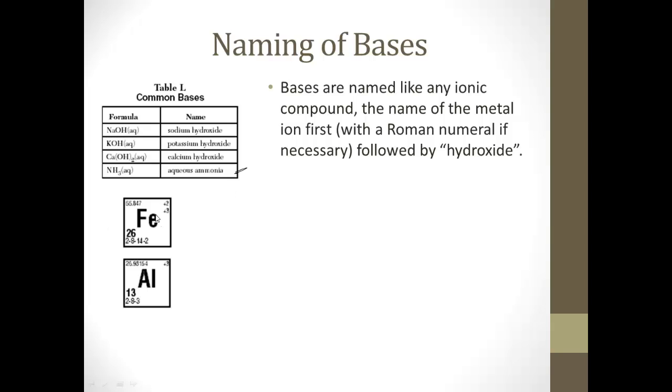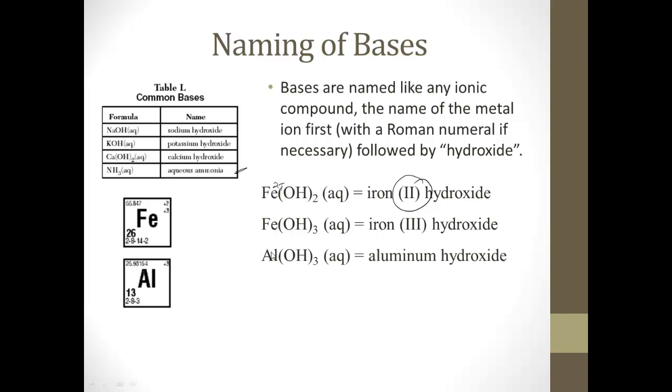So if we have FeOH2, that would be iron hydroxide. And in this case, since OH is minus 1, Fe is a plus 2, so it's iron two hydroxide. Remember, this means the oxidation state, not how many of them there are. If the iron has a plus 3, then it's iron three hydroxide. Aluminum hydroxide.